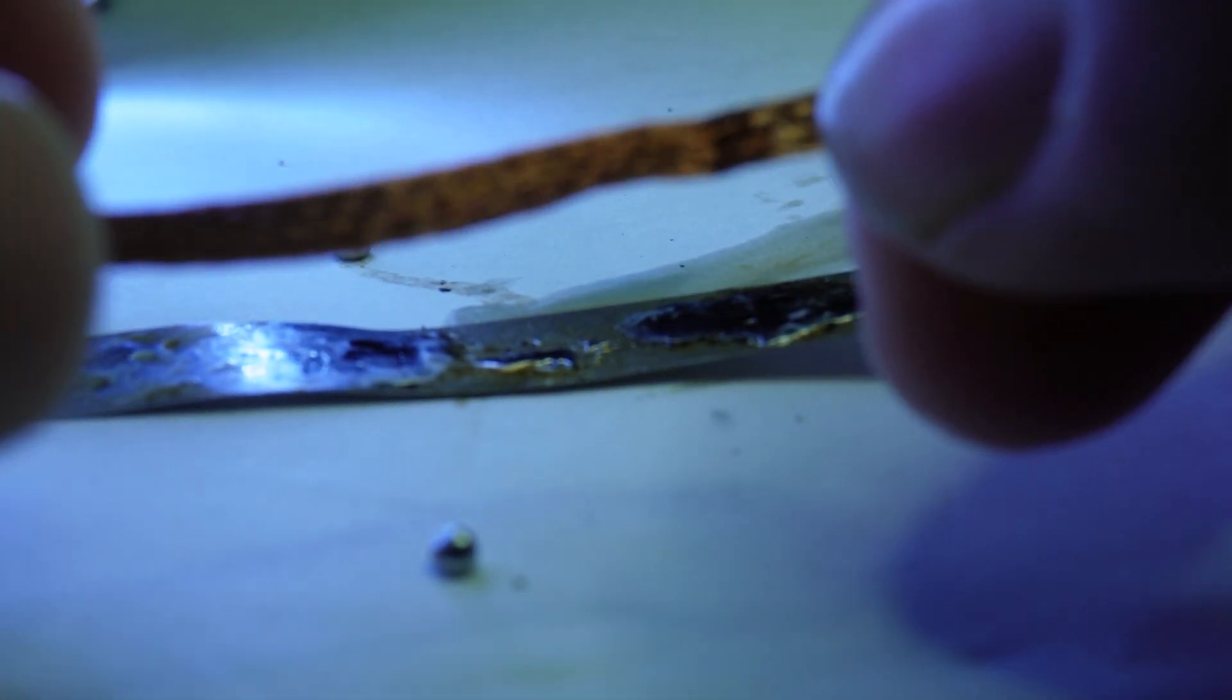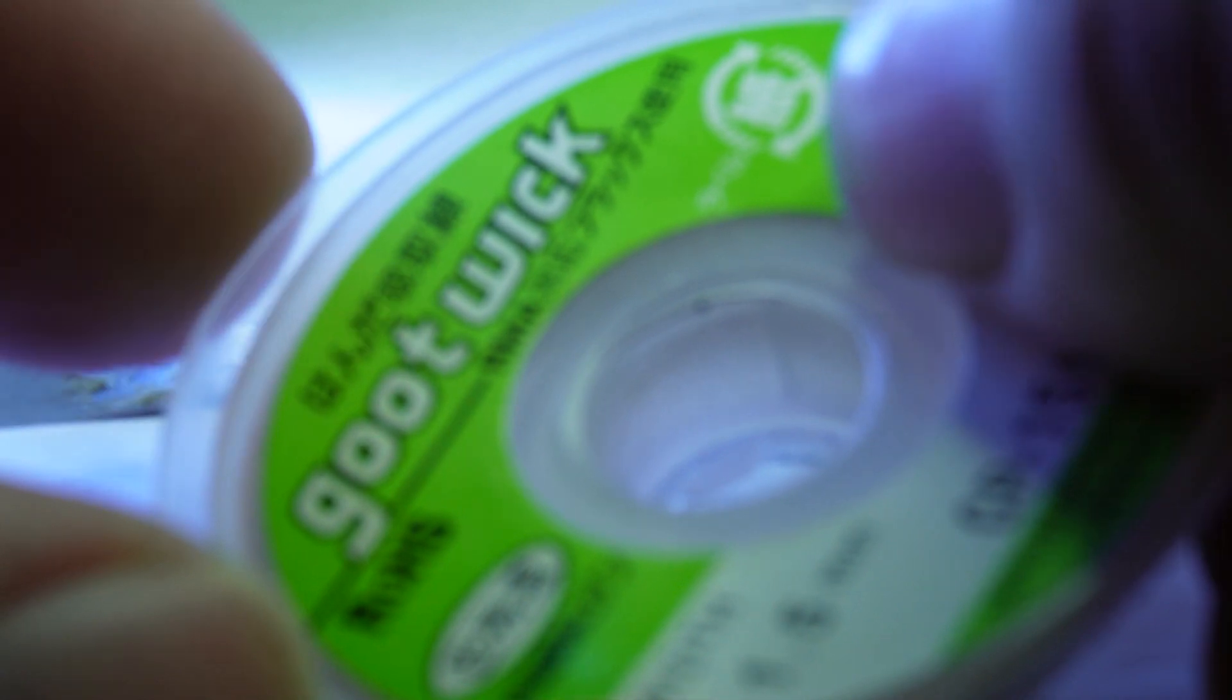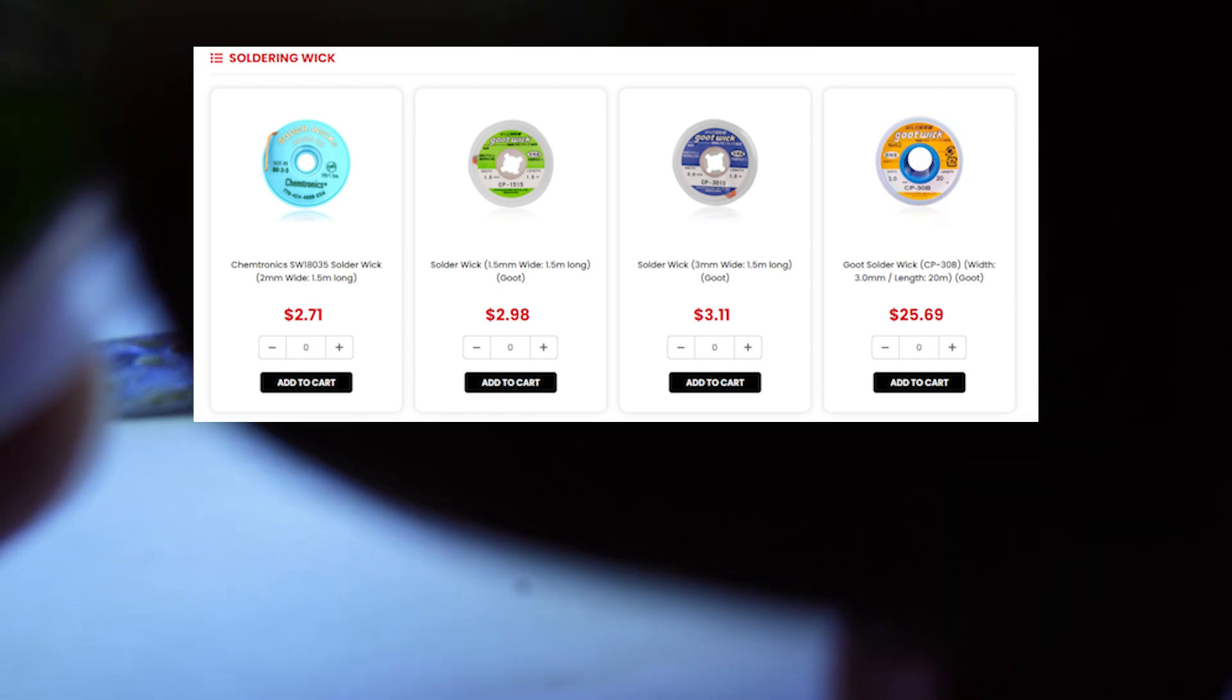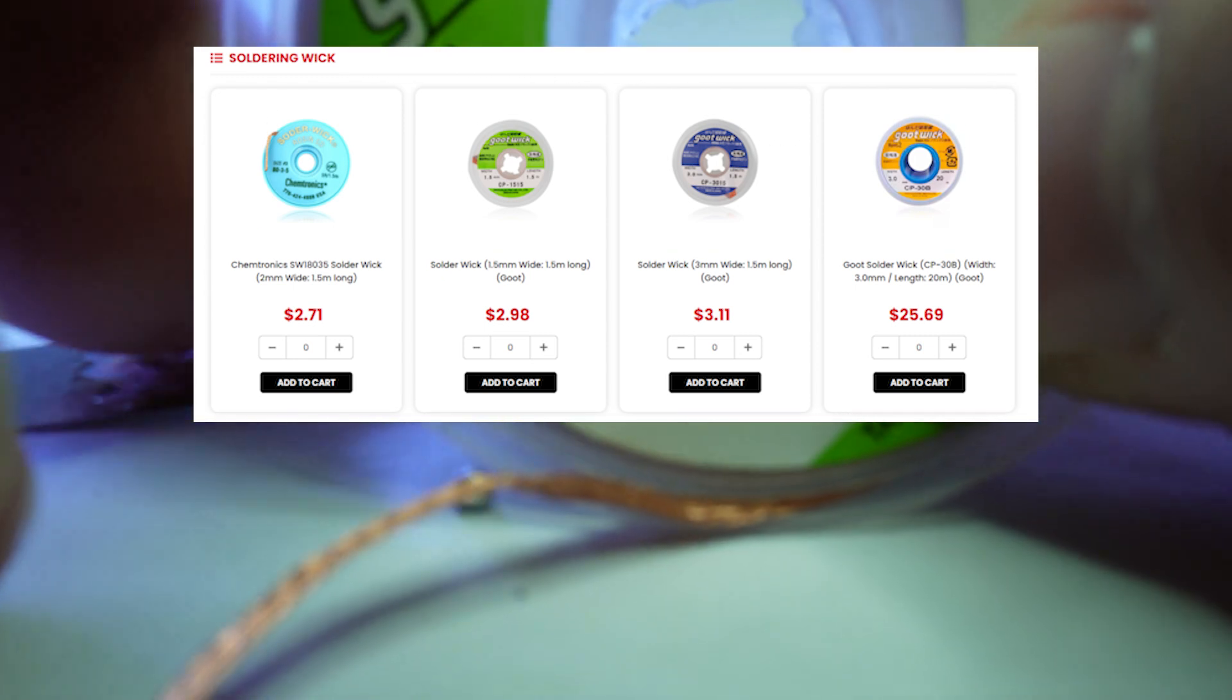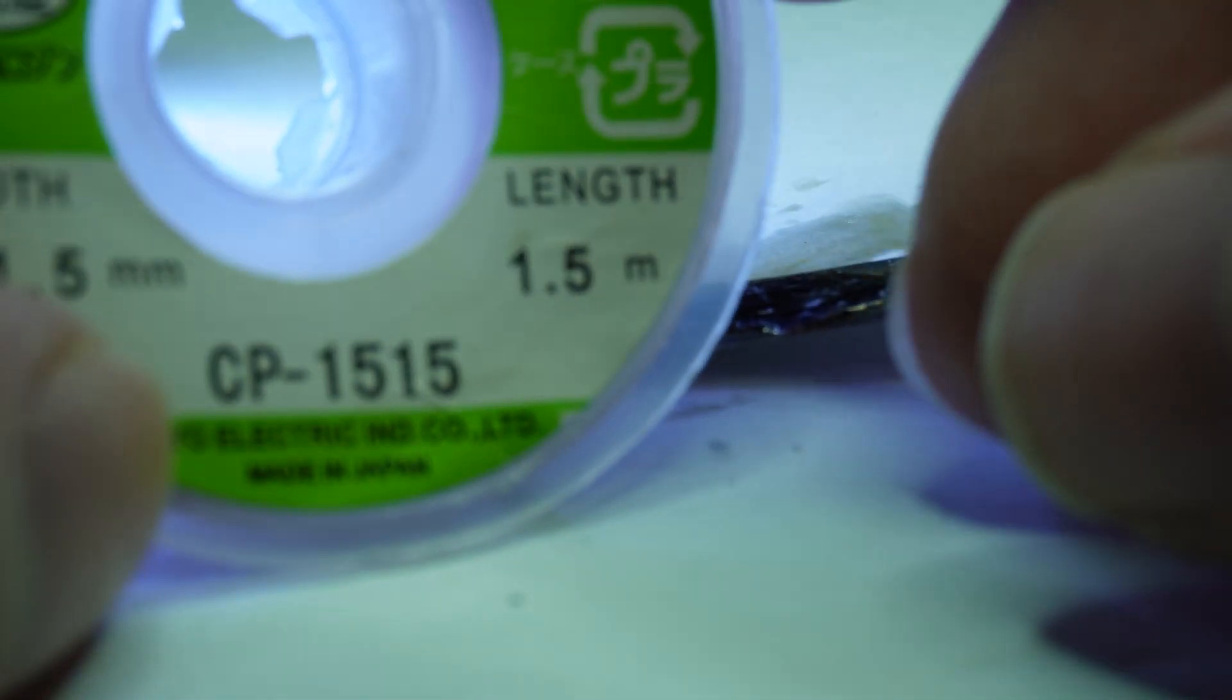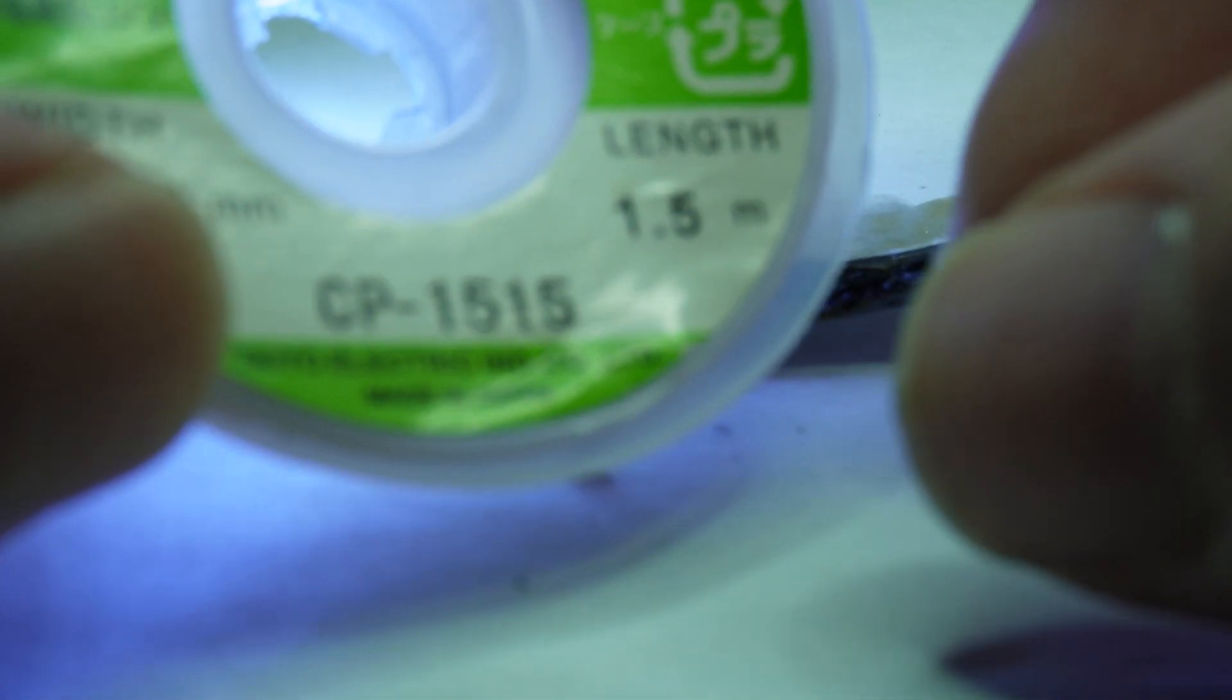To continue with some more basics, we're going to take a look at some wick. Wick is very interesting. Wick is just a braided copper wire. So if we take some braided copper wire, this is a brand of wick that I like, Goot wick. There's also some other ones like Chemtronics and a few other good ones out there. This is the 1.5 millimeter width. It comes at about five feet roughly of length. So it does last you a long time if you're wise with using it. But it too also needs flux.